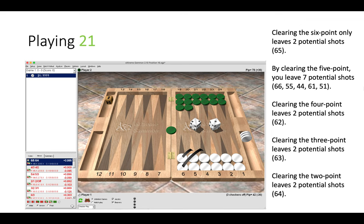And playing 2-1, well here the play is obvious. We clear the 6-point, only leaving two shots with 6-5, and anything else would leave more shots or have gaps in the boards which we don't like for the reasons aforementioned.